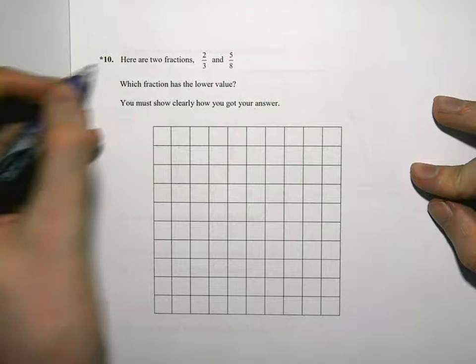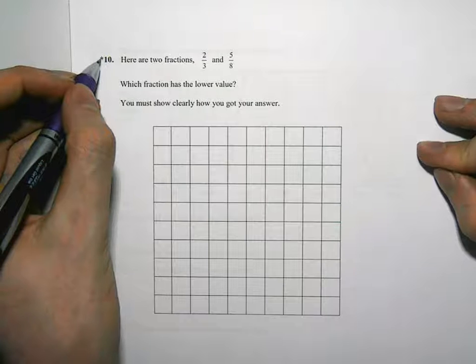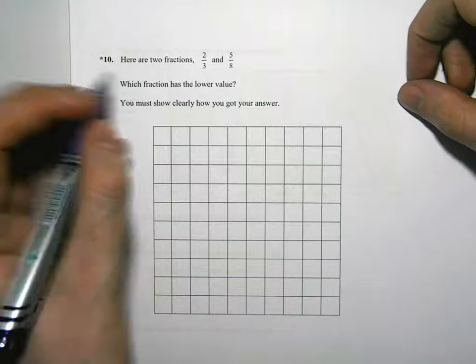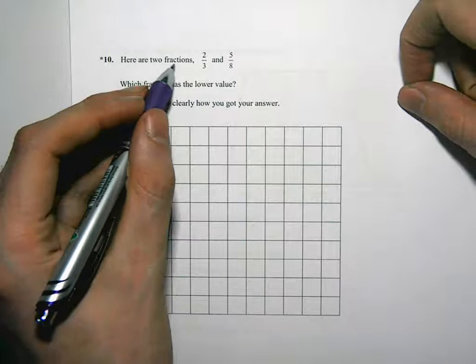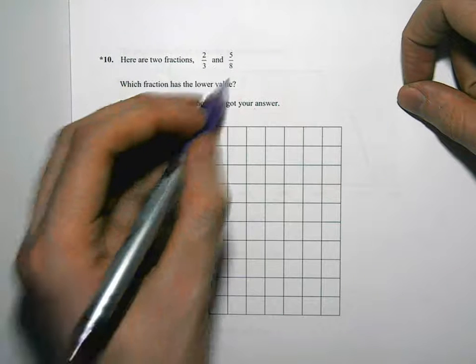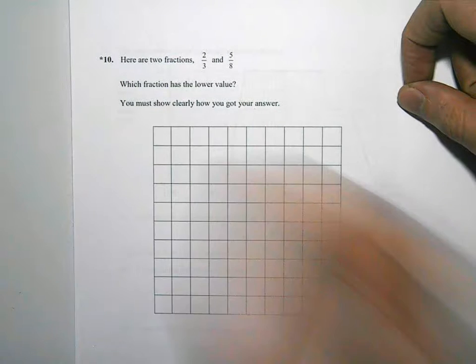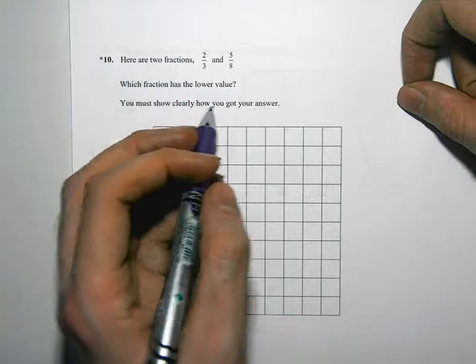Okay, so this question 10, this has got a little star, so that means we've got to explain our working out. So here are two fractions, 2 thirds and 5 eighths. Which fraction has a lower value? You must show clearly how you've got your answer.